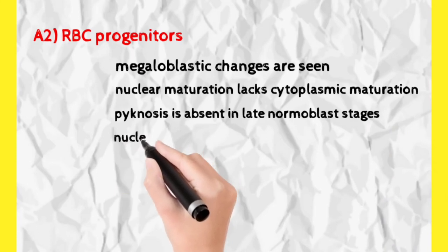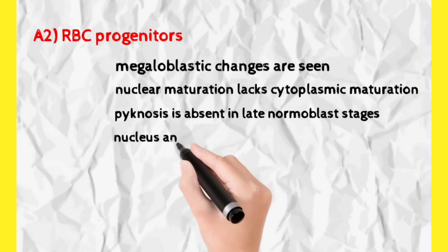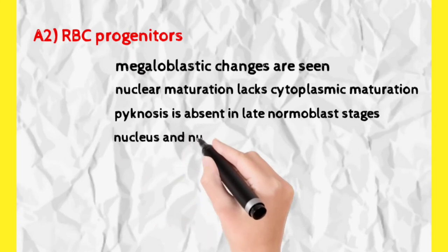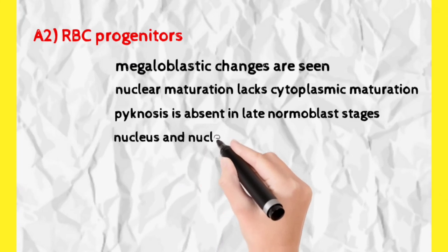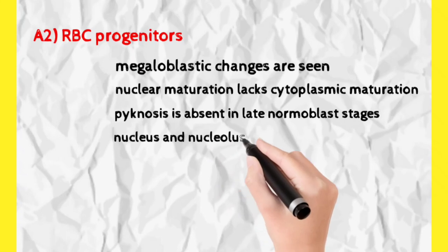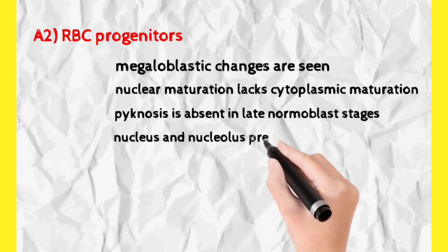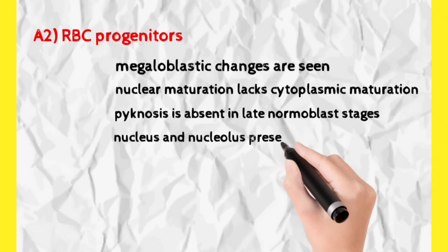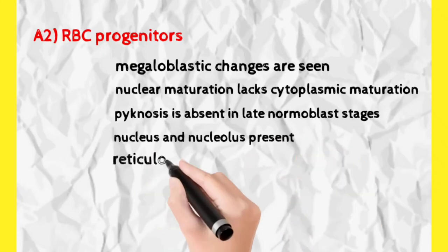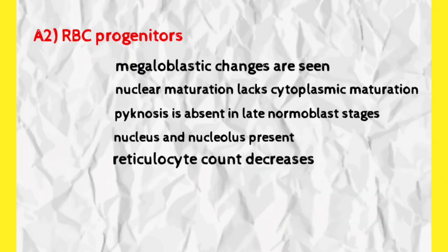In late normocytes and reticulocytes, nucleus and nucleolus are normally absent, but here they are present. Also, due to lack of DNA and nuclear maturation, reticulocytosis decreases — reticulocyte count decreases. This is an important feature.